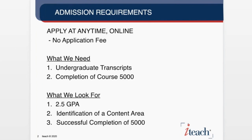Once we have that application, there are really two things that we need from you. We need at least undergraduate transcripts, and we need you to complete the introductory course, Course 5000. With your transcripts and the completion of that introductory course, we can look to make sure you have a 2.5 GPA, an identified certification area for enrollment, and that you have successfully completed Course 5000.